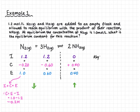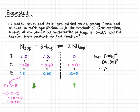To solve for Keq, we write our equilibrium law: products over reactants. So it's [NH3]² divided by [N2][H2]³. We plug in our numbers: 0.4 squared divided by 1.0 times 0.6 cubed. Make sure you're using brackets on the bottom — if you're not, you might end up with the wrong answer.